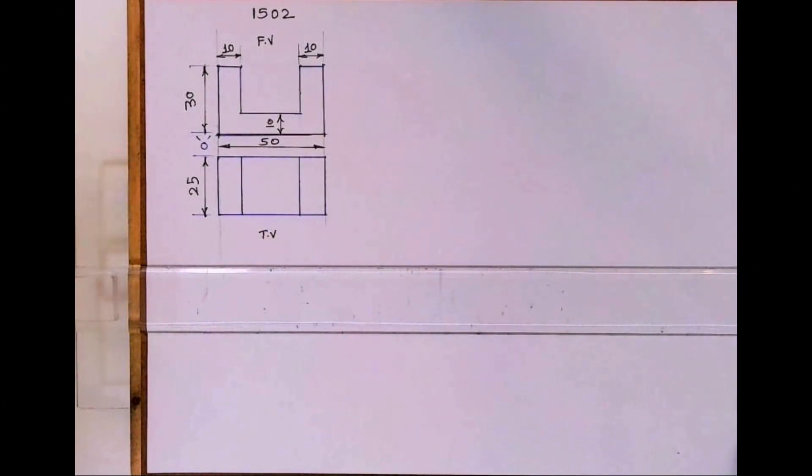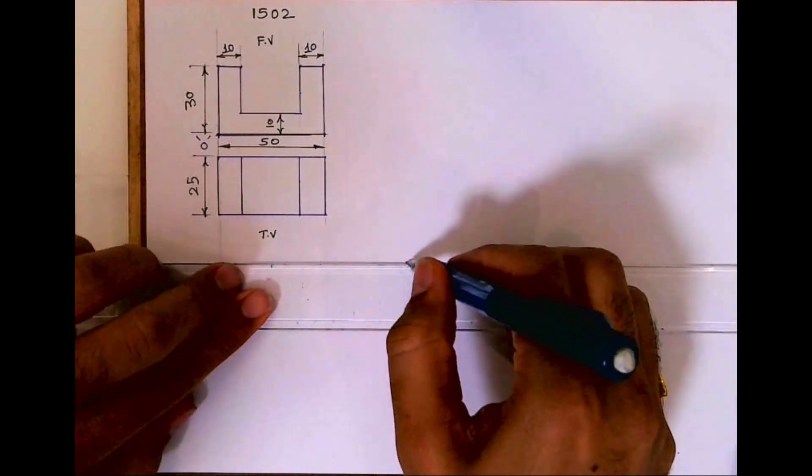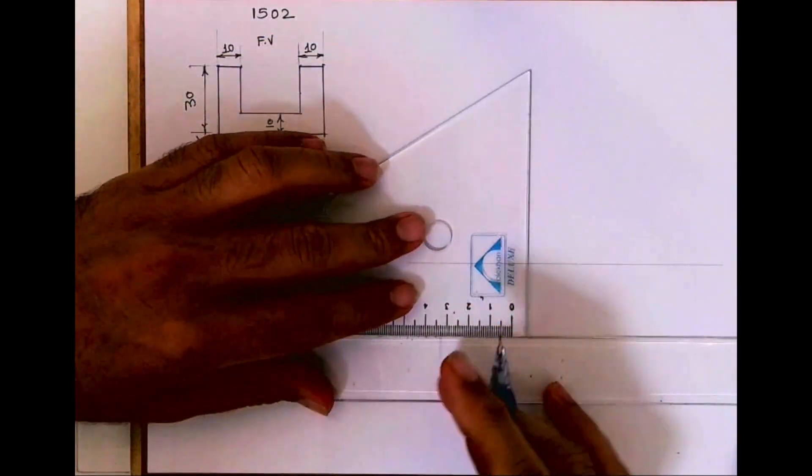Welcome to technical drawing. Today we'll solve this sample. If you see, they have given front view and top view. So first we will draw a layout. First we will draw horizontal, vertical, and 30-degree line.